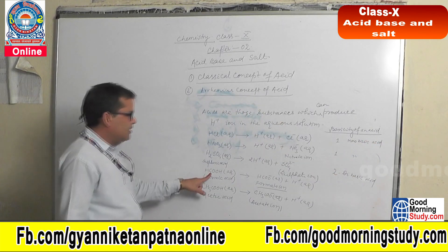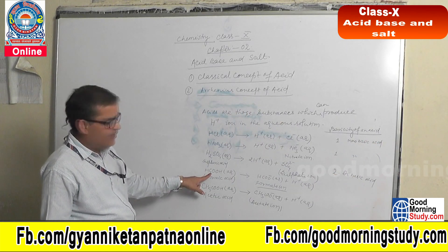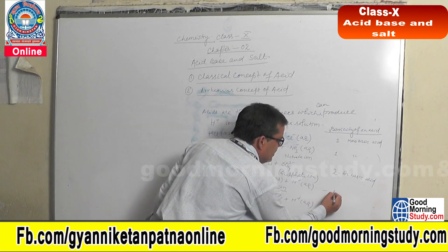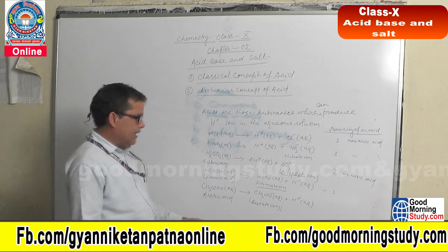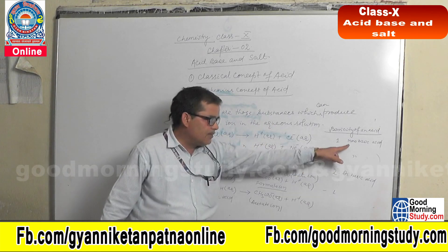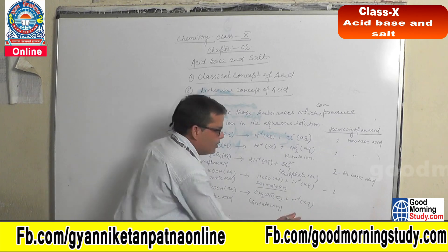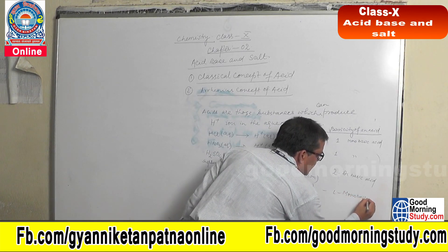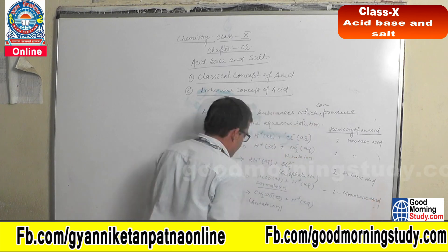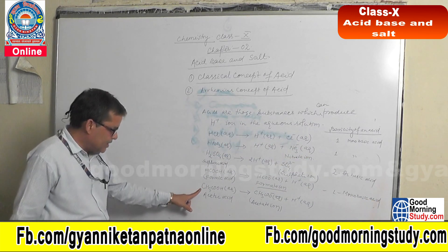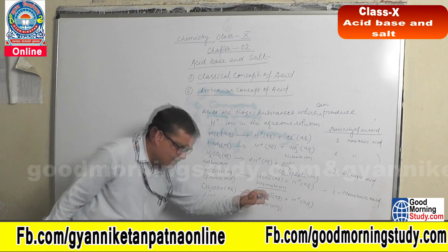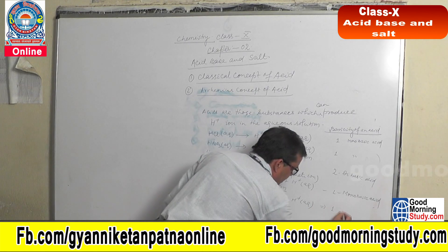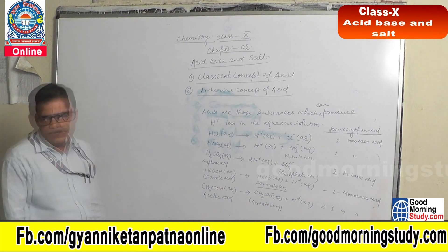Another example: HCOOH — what will be the basicity of that acid? It is producing one H+ ion, hence its basicity is one and it is a monobasic acid. Now acetic acid — it is also producing one H+ ion, hence its basicity is also one, and that will be the example of monobasic acid.